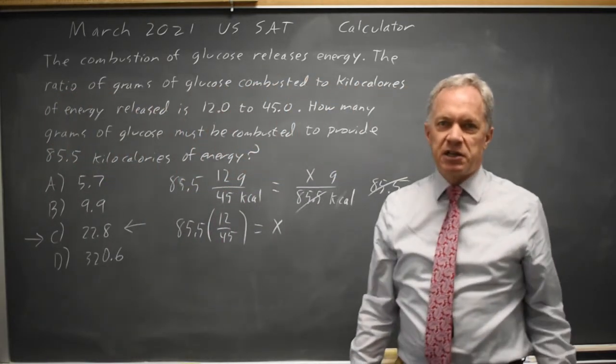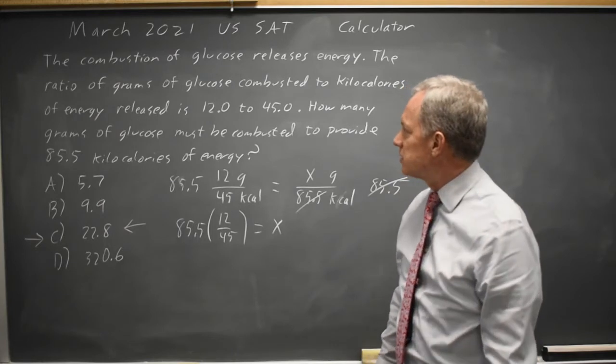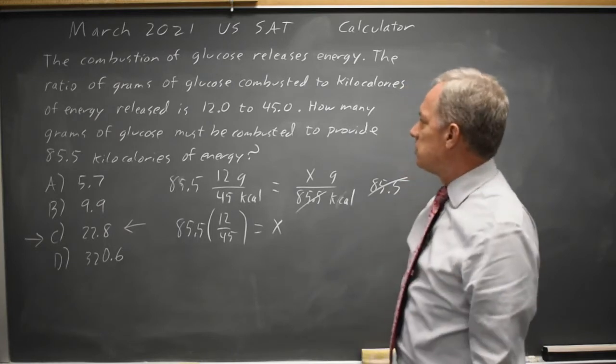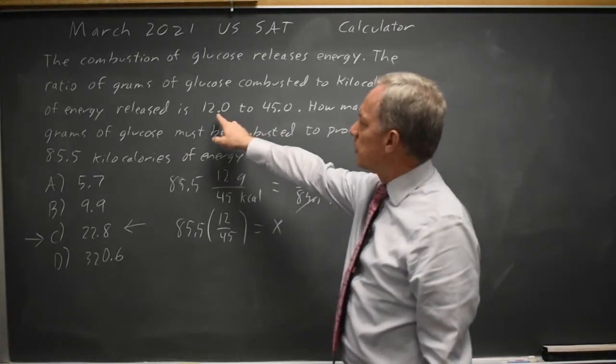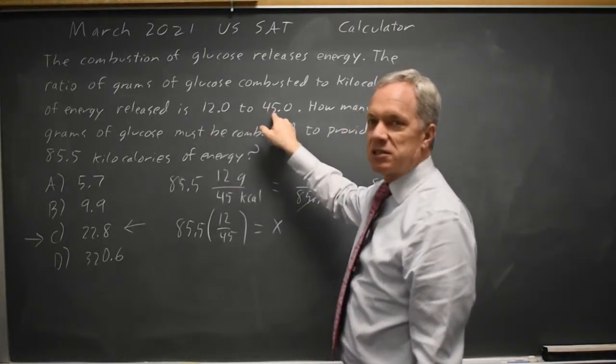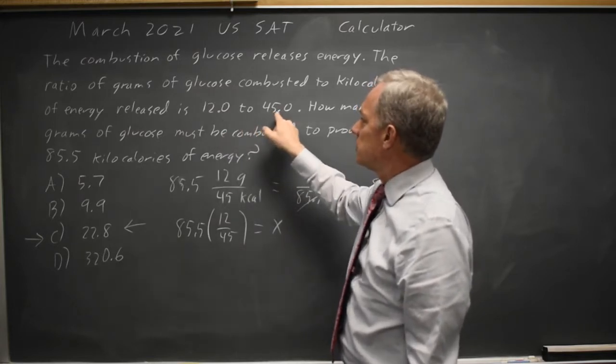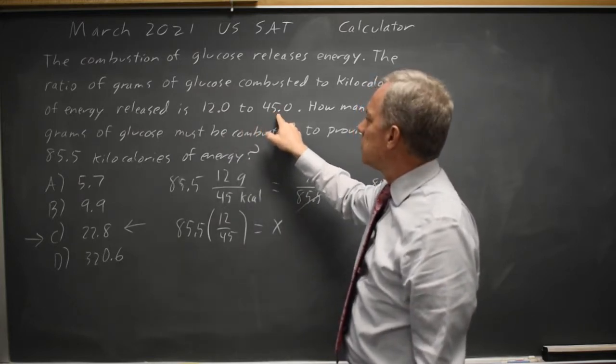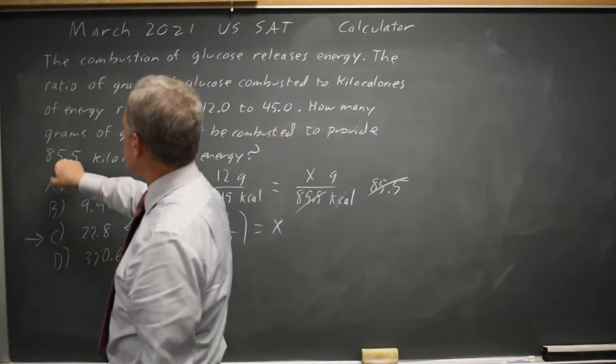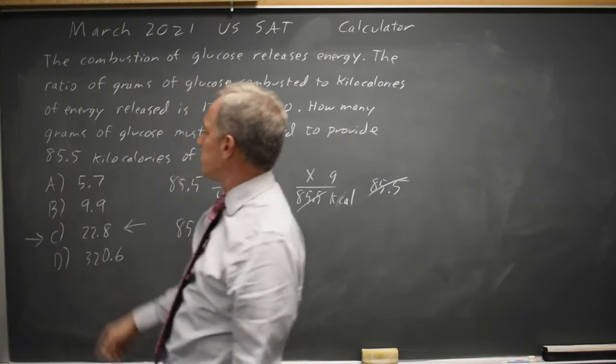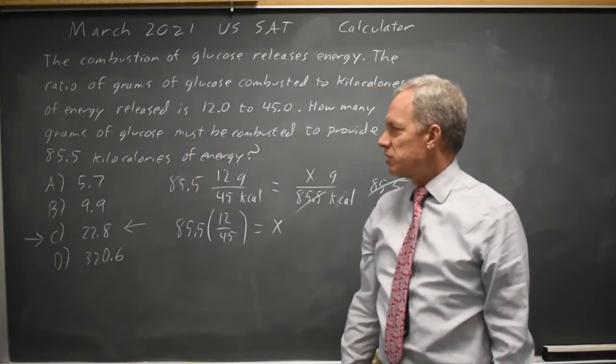If I wanted to do this without a calculator, which hopefully I remember my calculator and have batteries, and this is the reason this is early in the test, I could also say the number of grams of glucose is a little less than one-fourth the number of, no, I'm sorry, a little more than one-fourth the number of kilocalories. And so down here the number of grams of glucose should be a little more than one-fourth of 85.5, so a little more than 21.